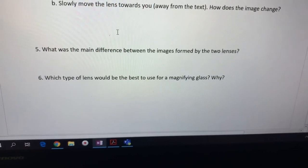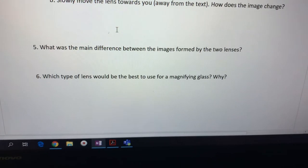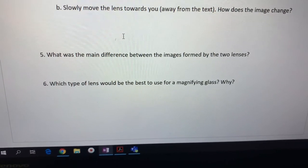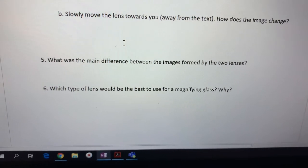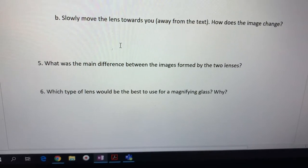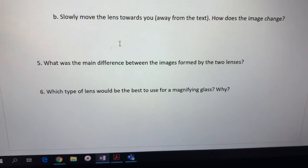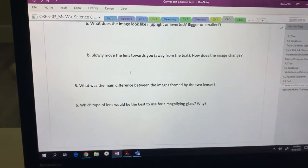Question number five: what is the main difference between images formed by the two lenses? Oh, bigger, smaller. Yeah, so you summarize that in terms of size. And question number six: which one would be best used for magnifying glass? Oh, I'm not giving that one away. You're going to have to answer that one. Good. So that was the handout labeled concave and convex lenses.